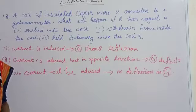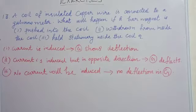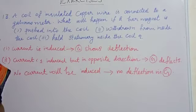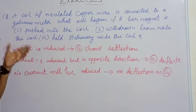Next step, question 13. A coil of insulated copper wire is connected to a galvanometer. What will happen if a bar magnet is: